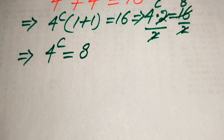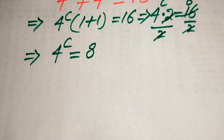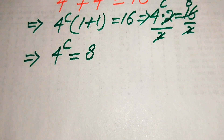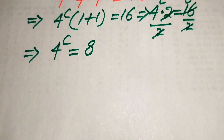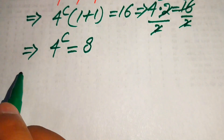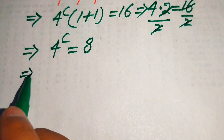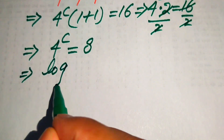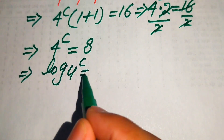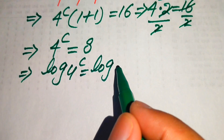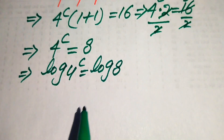In the next step, in order to find the values of c, we need to apply the log on both sides. When we apply log on both sides, it will be written as log of 4 to the power of c equals log of 8.